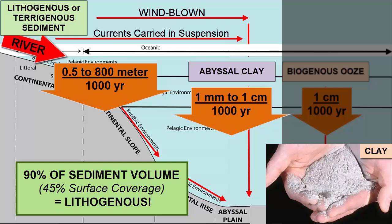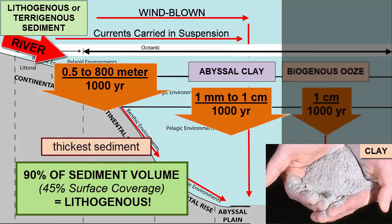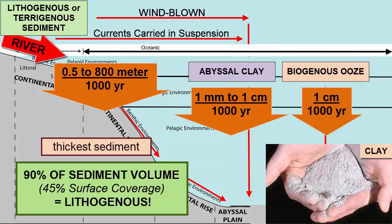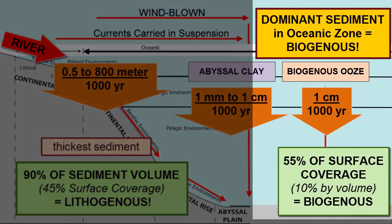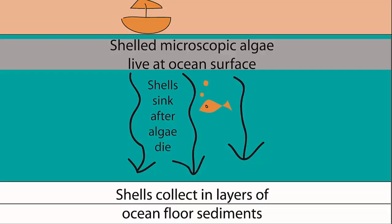However, because most of this volume stays close to the margins and piles up there thickly, lithogenous sediments represent only 45% of the total seafloor surface coverage. The sediment that covers most of the seafloor surface is biogenous, which consists of shells of dead organisms and dominates the oceanic zones.